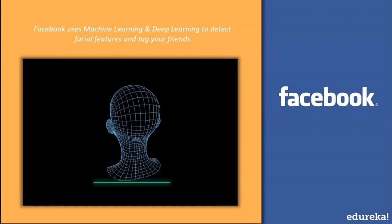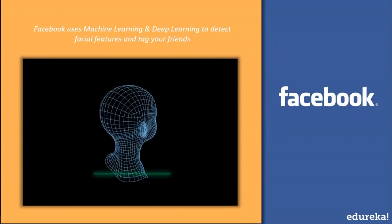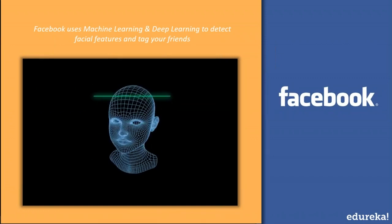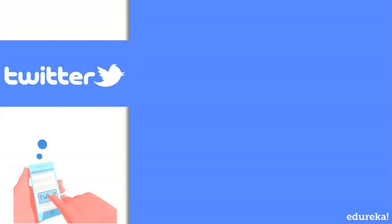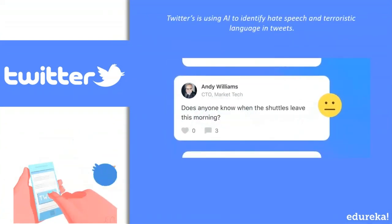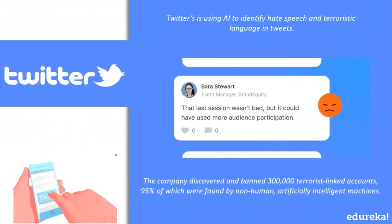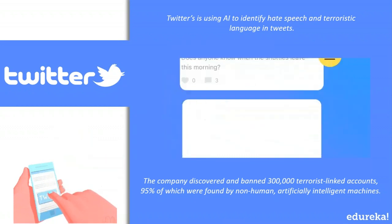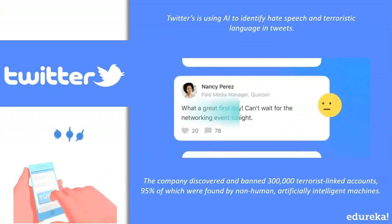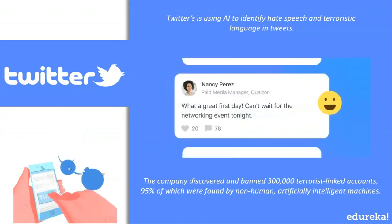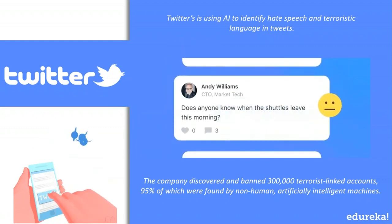We're actually largely unaware that we use AI very regularly in our lives. Social media platforms like Instagram, Facebook, and Twitter heavily rely on artificial intelligence. Twitter's AI is being used to identify hate speech and terroristic language in tweets, using machine learning, deep learning, and natural language processing to filter out offensive or reportable content. Recently, the company discovered around 300,000 terrorist-linked accounts, and 95% of these were found by non-human, artificially intelligent machines.